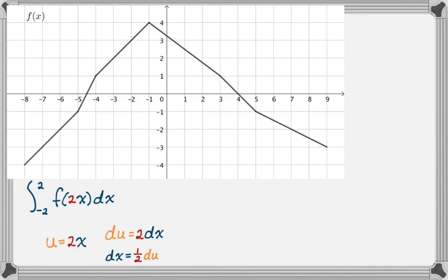Now I need to change the x equals negative 2 and x equals 2. If x is equal to negative 2, I know that u is going to be equal to 2 times that. So 2 times negative 2 is negative 4. If x is equal to positive 2, I know that u is going to be 2 times that. So it's going to be positive 4.